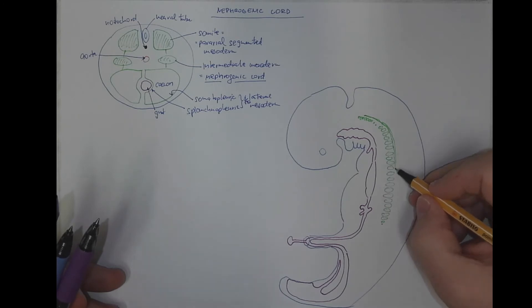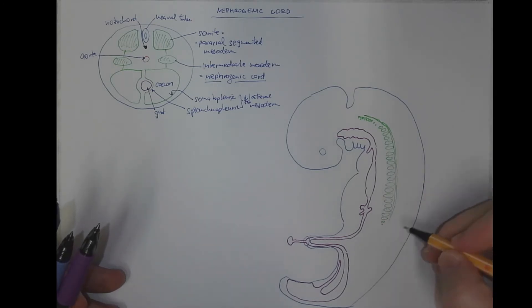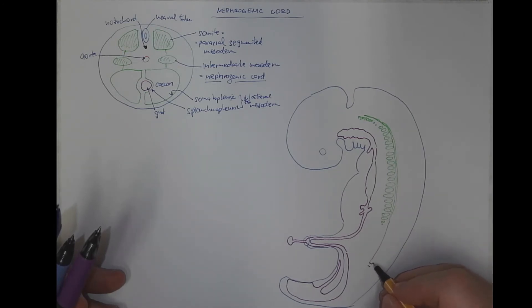They already got a luminized duct, which in the sacral region branches into a ureteric bud, which together with the surrounding mesoderm will give rise to the final form of kidney.